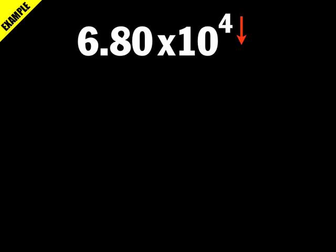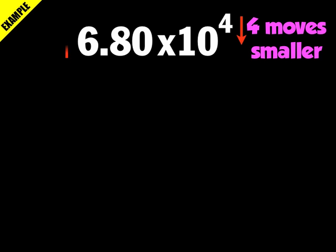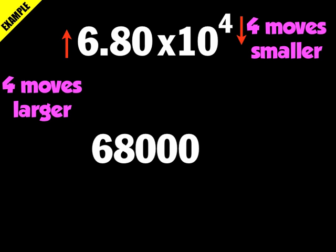Now let's work the other direction — converting to decimal form. Take 6.80 times 10 to the fourth. I want to get 10 to the fourth down to 10 to the zero, which means I've got to make the exponent four times smaller. Remember, whatever happens to the exponent, the opposite happens to the mantissa. So the exponent gets four times smaller, which means the mantissa has to get four times larger — I move the decimal point to the right four spaces.